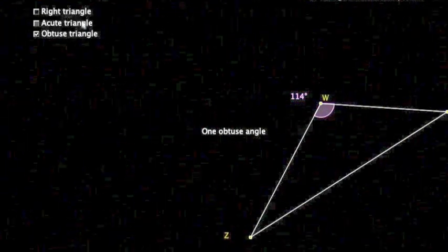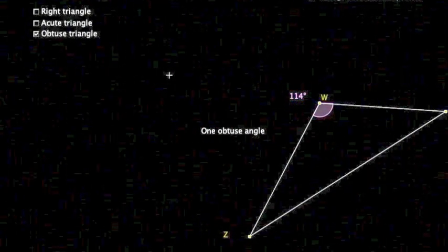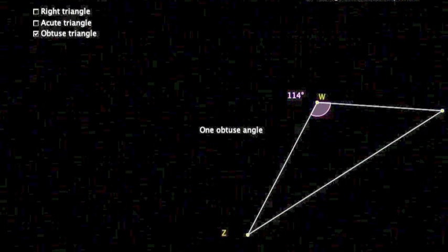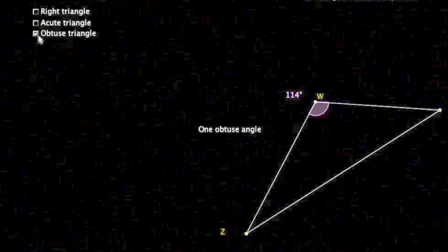So both for right and obtuse, those are identified by one angle within the triangle. The acute, it's identified by all three angles.